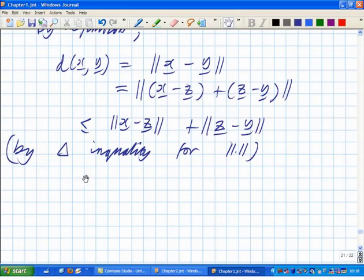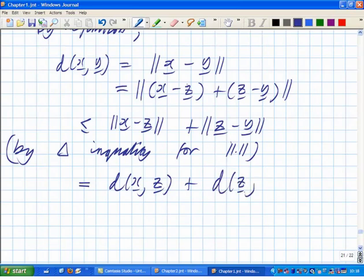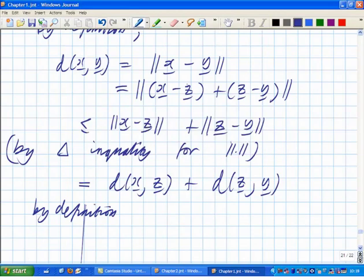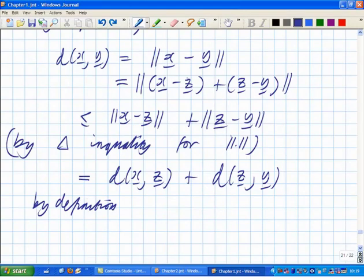So that's smaller or equal to the norm of x minus z plus the norm of z minus y by the triangle inequality for norm. So notice what we're using. We're using the triangle inequality for norm to prove the triangle inequality for distance d. But that's actually equal to distance from x to z plus distance from z to y by definition of d. And that finishes the proof.